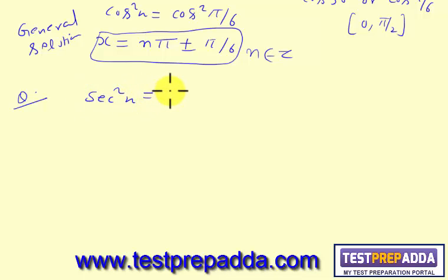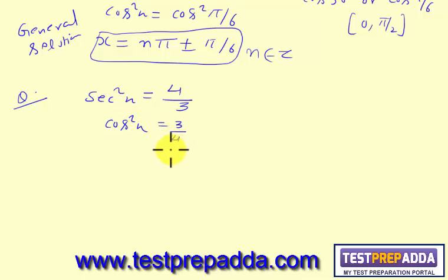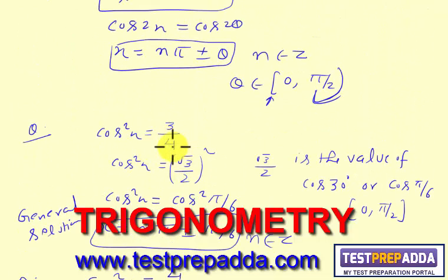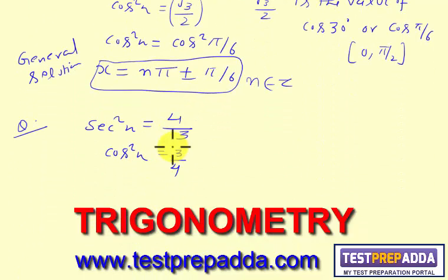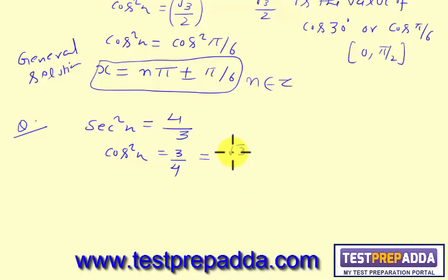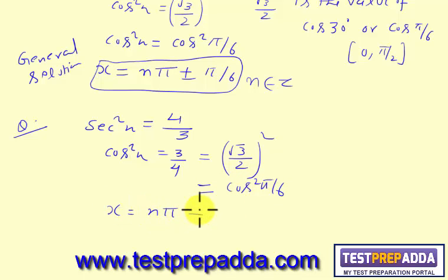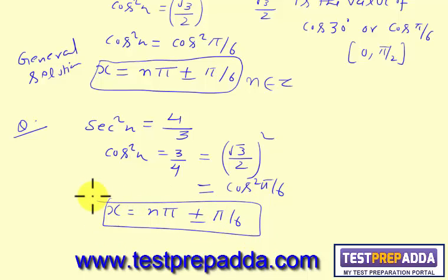Similarly, for sec²x = 4/3, we can rewrite this as cos²x = 3/4. This is the same equation as before, so again write 3/4 = (√3/2)² = cos²(π/6). The general solution is the same: x = nπ ± π/6.